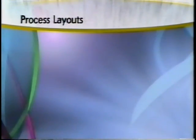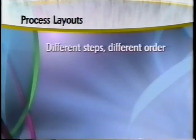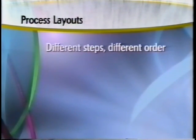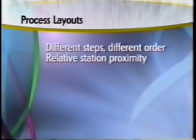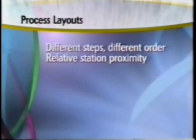There are several types of layout available to service organizations. Many of these are variations of what is referred to as process layouts. In a process layout, design centers on the variety of processes that take place at the facility. Each unit of production may go through different steps in a different order each time. To make a process layout effective, we want good relative station proximity.